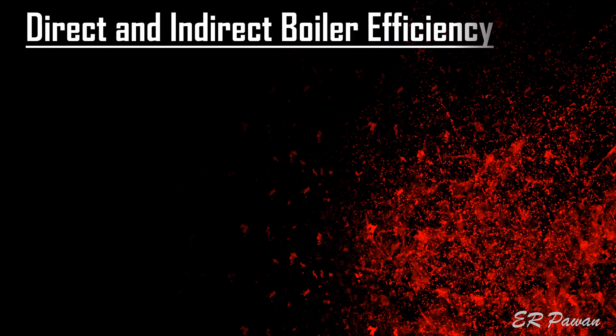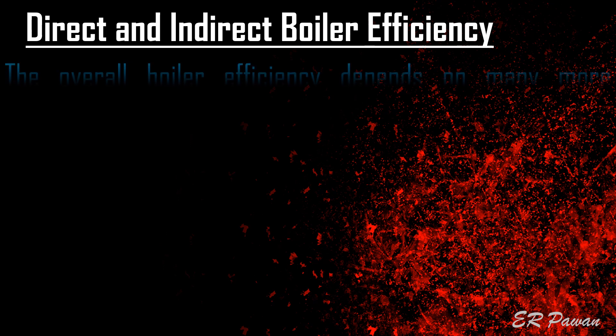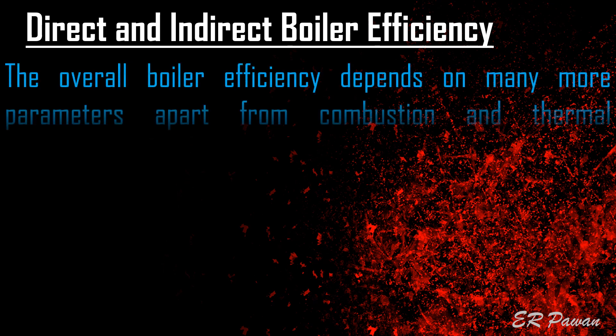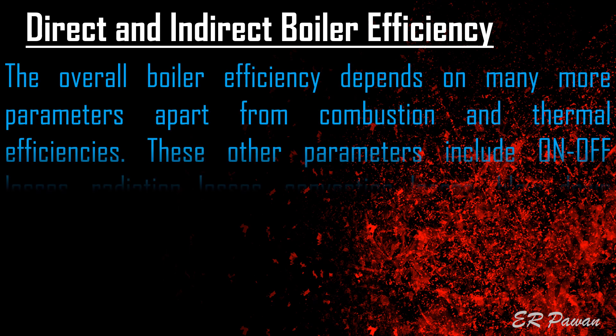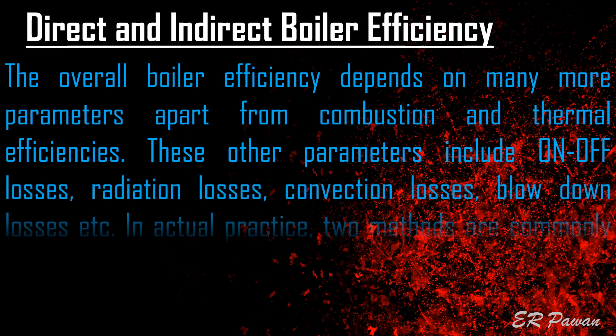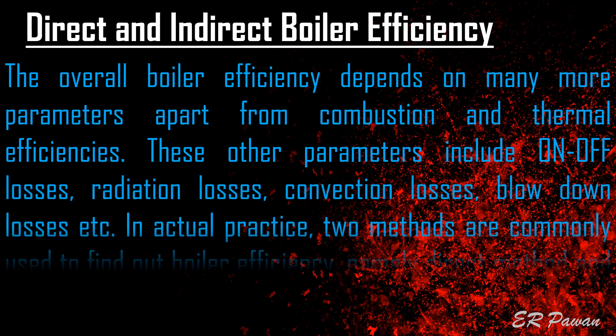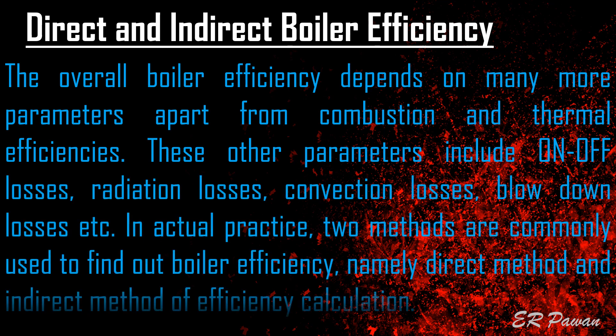The overall boiler efficiency depends on many more parameters apart from combustion and thermal efficiencies. These other parameters include on-off losses, radiation losses, convection losses, blow down losses, and others. In actual practice, two methods are commonly used to find out boiler efficiency: the direct method and the indirect method of efficiency calculation.